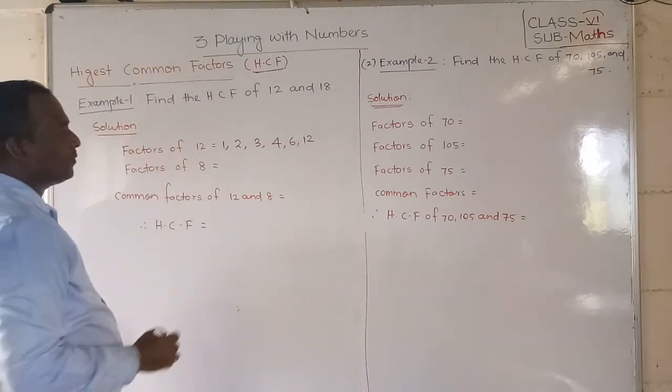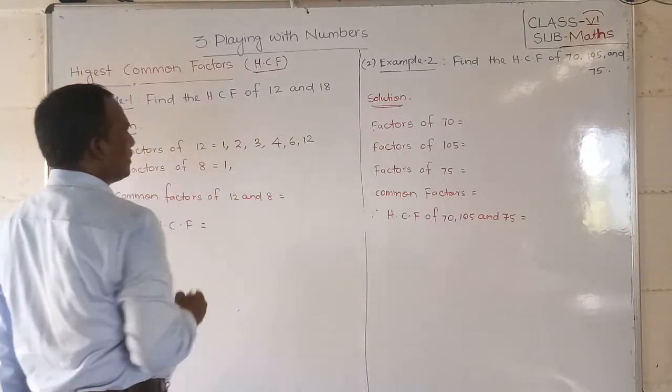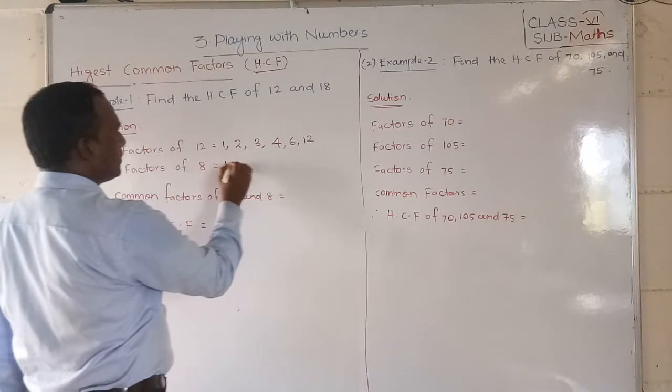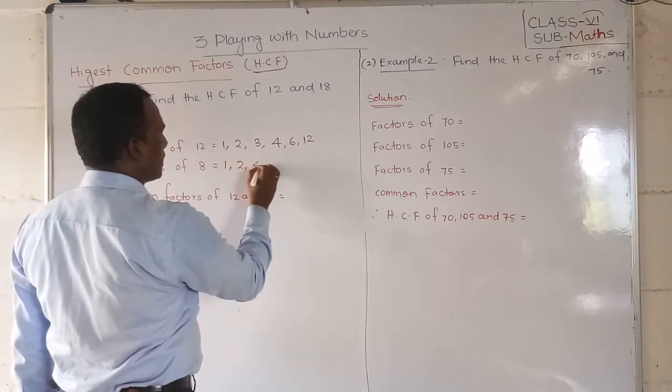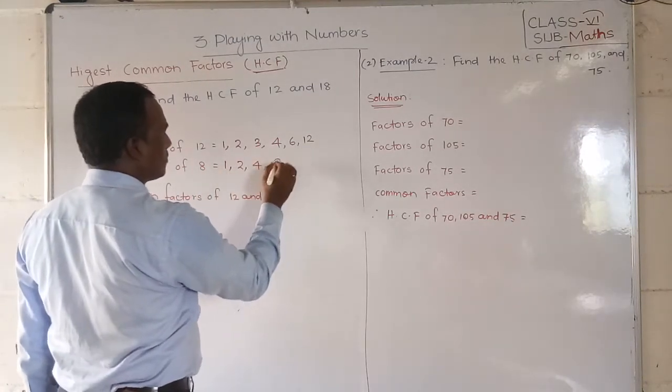Similarly students, we need to find the factors of 8. 1 is compulsory. Next, 2 is there, so 2. 2 times 4 is 8. Next 4 times 2 is 8. Next 8.